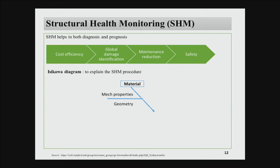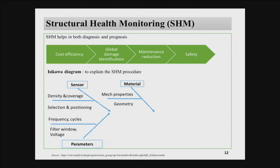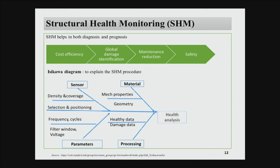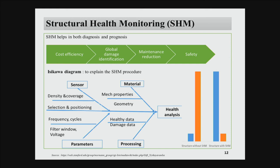The advantages of structural health monitoring include cost-effectiveness and safety. A kind of Ishikawa diagram shows the components needed: materials with their geometry and mechanical properties, sensors positioned at various locations, parameters like frequency, cycles, filter window, and voltage. From the data, you separate what you need from what you don't, resulting in a final health analysis. A bar chart comparing NDT and SHM shows that reliability is much lower with traditional NDT methods, while with the SHM method reliability is higher, with a different total cost profile as well.